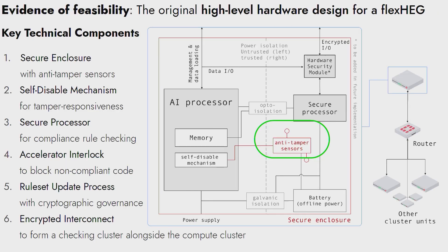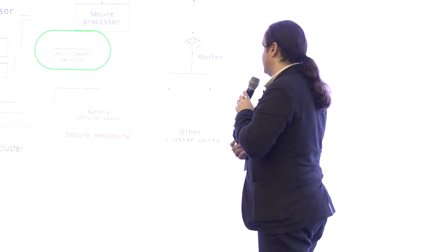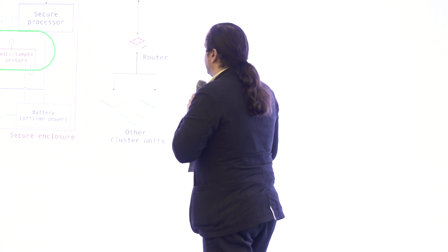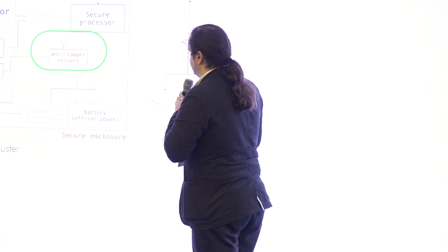Here's why I think this is possible — a high-level design for FlexHeg. There are basically six components. The first is a physical security perimeter with sensors for all possible ways someone could try to break through it, including thermal disruption, mechanical disruption, kinetic, and electrical. You need noise generation on that security perimeter in ultrasonic and electromagnetic domains to mask any potential leakage of confidential information through those channels.